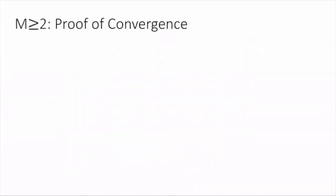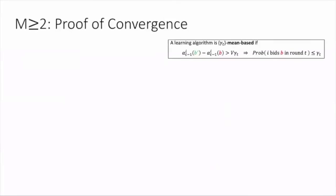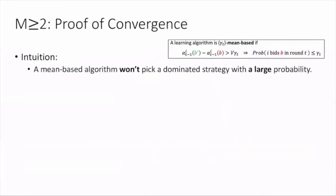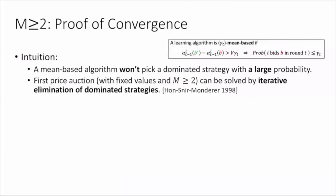Let me highlight our proof of the convergence results, which is the most exciting part of our work. Recall the definition of mean-based property. Intuitively, if a bid b is dominated by another bid b prime, then the probability of choosing b is no greater than a small constant. This means a mean-based algorithm won't pick a dominated strategy with large probability. The convergence may be straightforward if there is a dominant strategy. Unfortunately, there is no dominant strategy in the first price auction. But the good thing is, we find first price auction with fixed values and more than two highest-value bidders can be solved by iterative elimination of dominated strategies.